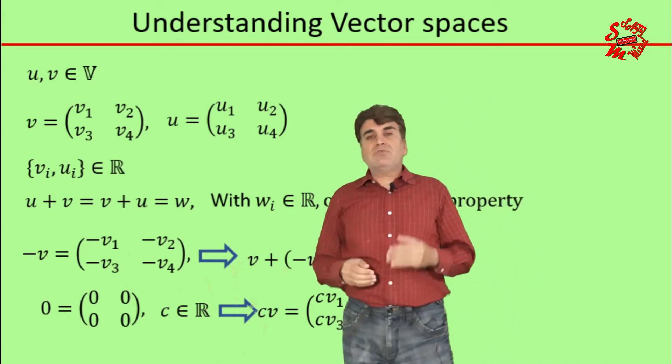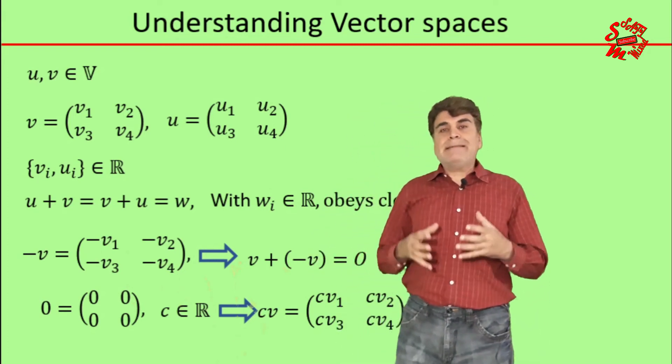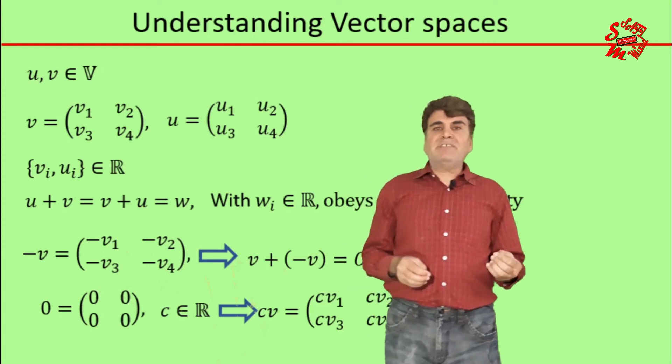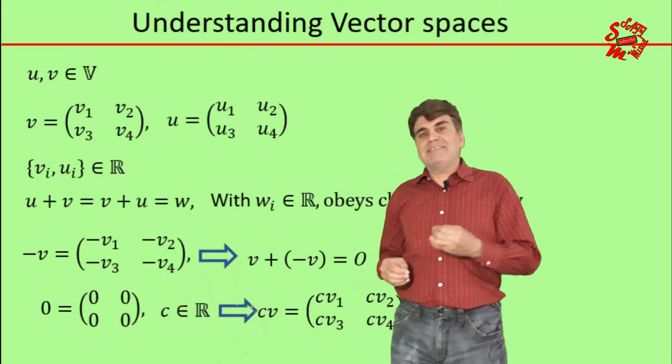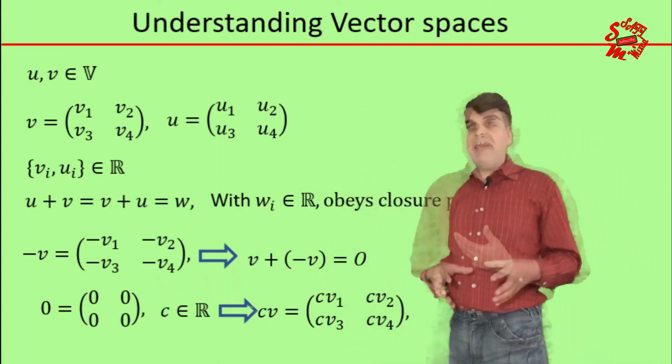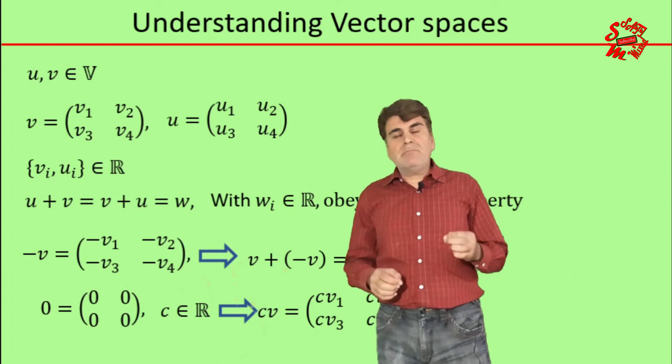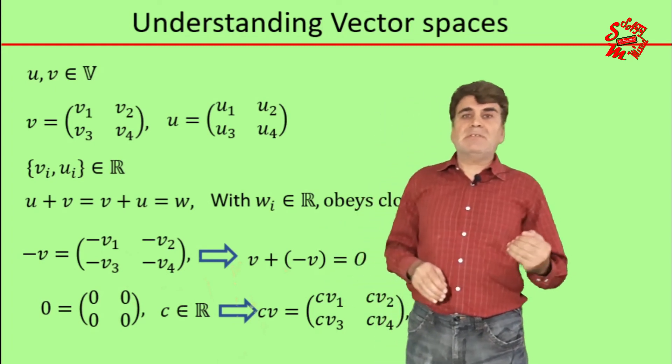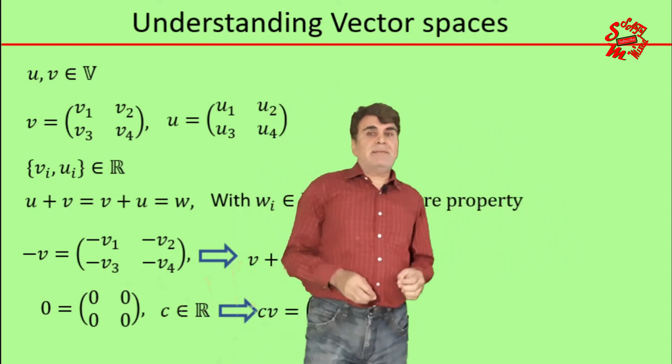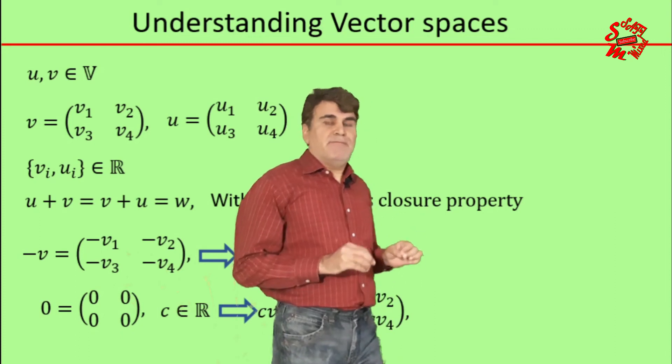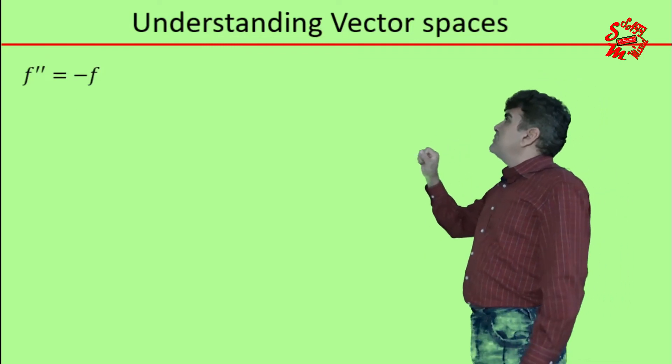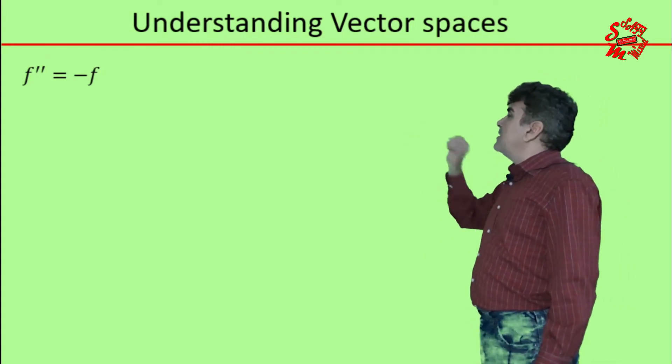So a set of square matrices over a field of real numbers constitutes a vector space, and therefore the space constituted by square matrices cannot be obviously assigned the concept of length or direction. The next example is about functions: can a function on the field of real numbers or complex numbers constitute a vector space? Again, the answer to this question is yes, and I will explain this by restricting myself to a special kind of function.